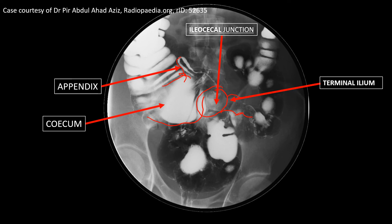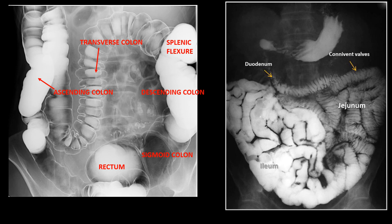In barium enema, we cannot see the whole small intestine, while in barium meal we can see the small intestine. In barium enema, the large intestine is visible, which may also be visible in some barium meal studies. Comparing barium enema and barium meal X-rays: in barium enema we can visualize only the large intestine, and the small intestine generally does not appear. While in barium meal studies, we can see the small intestine, although the large intestine may also be visible. By these studies, we can also identify any intestinal obstruction.